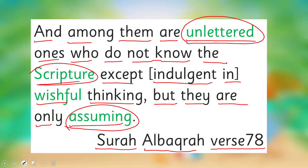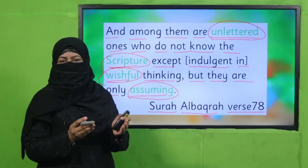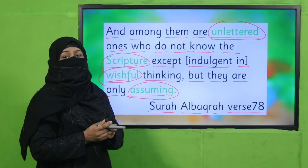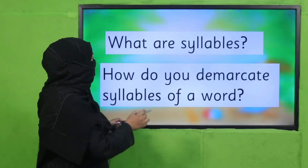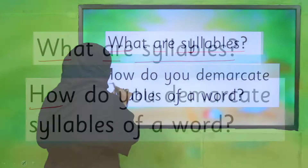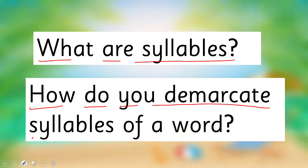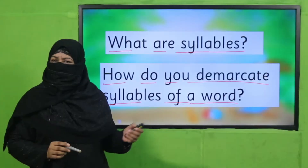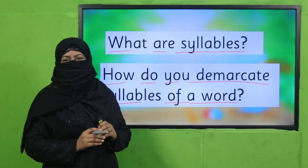Now look at these words — I have given them different colors because when we say these words they have different syllables. So how do we find out the syllable of words, and how do we demarcate a word for syllables? We are going to learn. First, you tell me: what are syllables and how do you demarcate syllables of a word? Pause the video, answer this question to your teacher, and then come back.